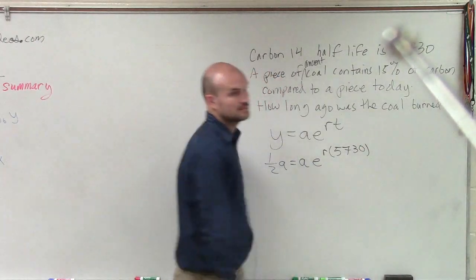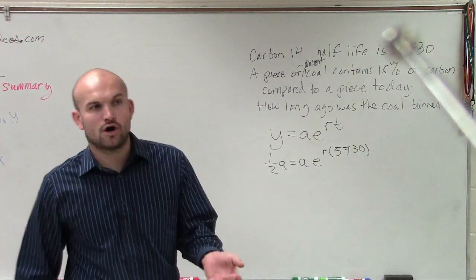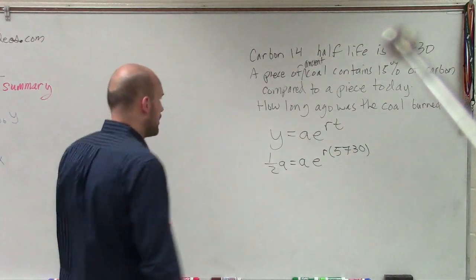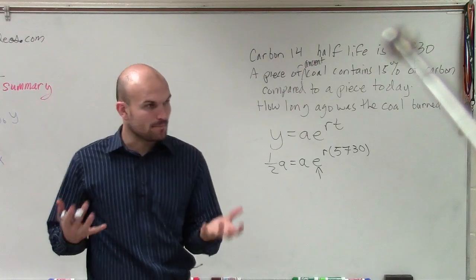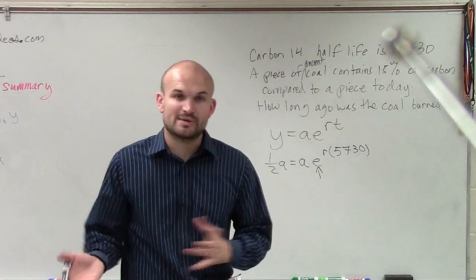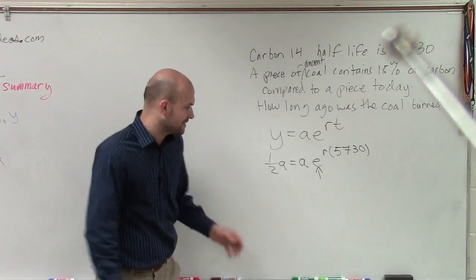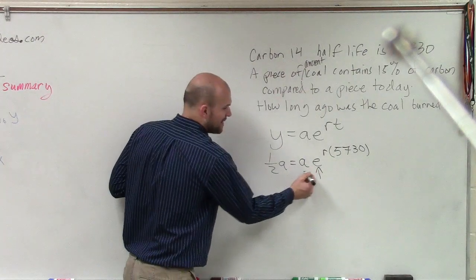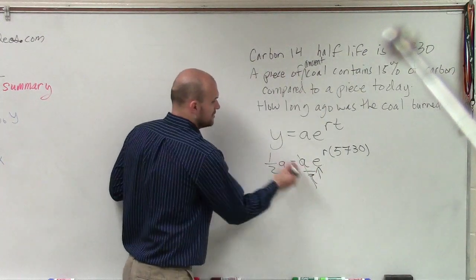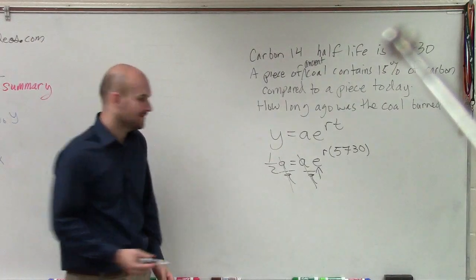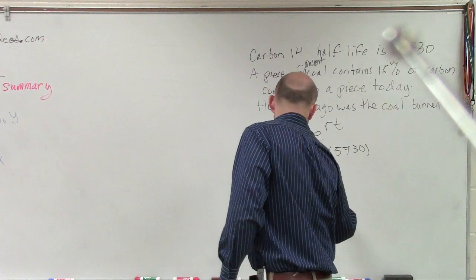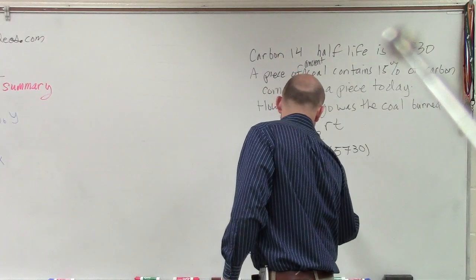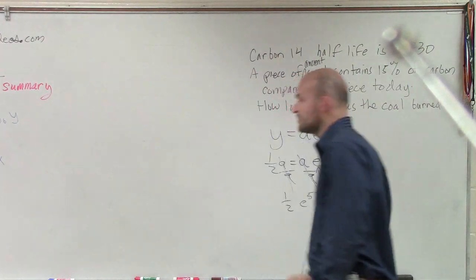So we need to solve for R. So to solve for R, what do we do? We isolate our E, right? That's our base. We need to isolate that. So we need to undo everything that's happening to it. Well, I'm multiplying by A, so I'll divide by A on both sides. Well, that's nice. They both go to 1. So I have 1 half E to the 5,730 R. I'm just going to rewrite those.